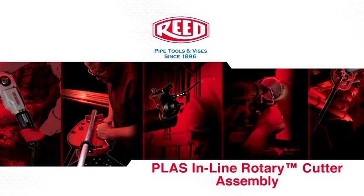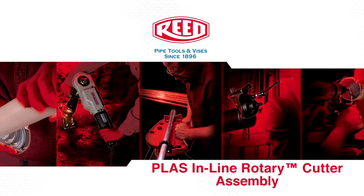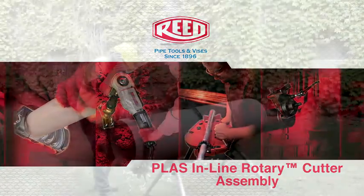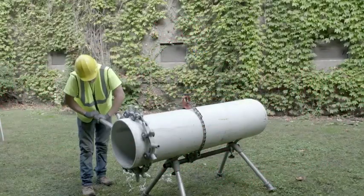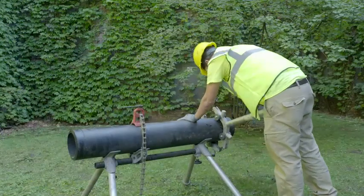Today we will demonstrate the assembly of Reed's PLAS inline rotary cutter for PE and PVC pipe. The PLAS cuts 6 inch to 28 inch diameter pipe.